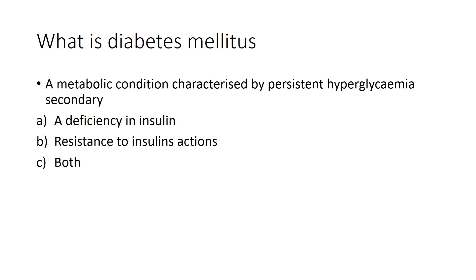Diabetes is a metabolic condition characterized by a state of persistent hyperglycemia. This state of persistent hyperglycemia can result from either a deficiency in insulin, resistance to the action of insulin, or at other times both of those conditions may be present.